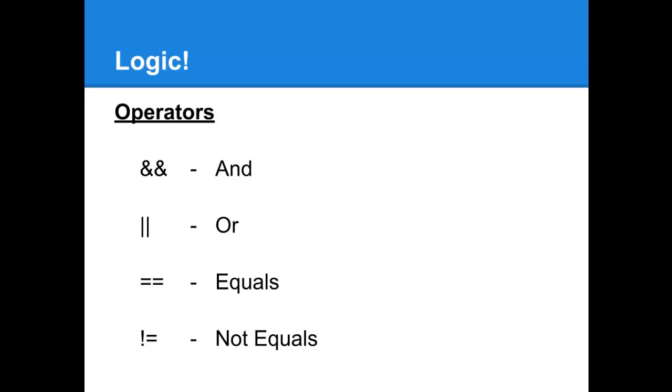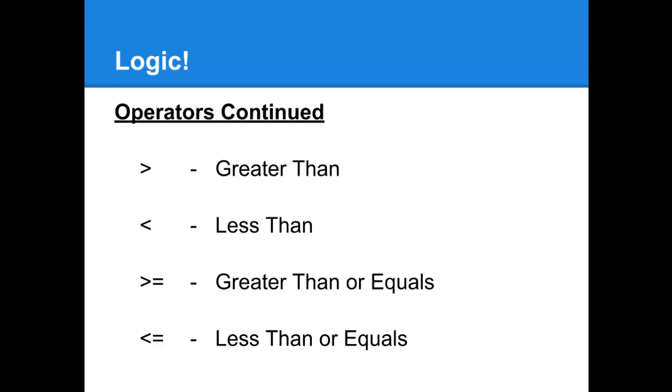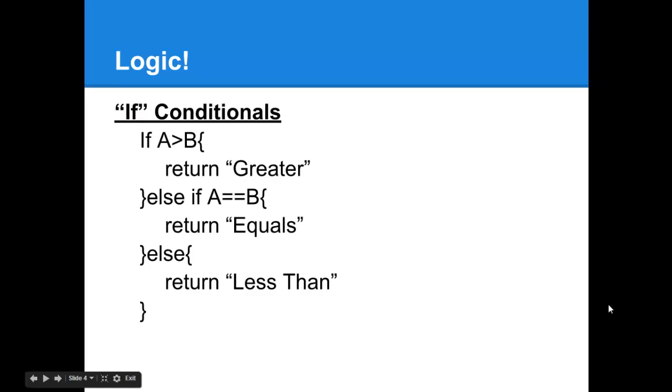In this case, they're pretty straightforward. The double ampersand for and, the double pipe for or, the double equal sign for equals, the exclamation mark equal sign for not equals, greater than, less than, greater than equals, or less than or equals are also straightforward.